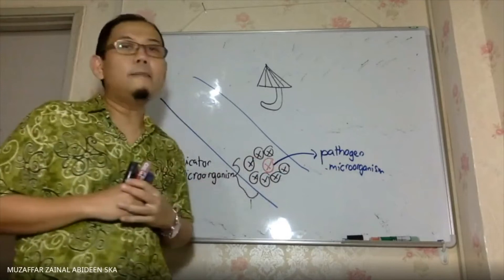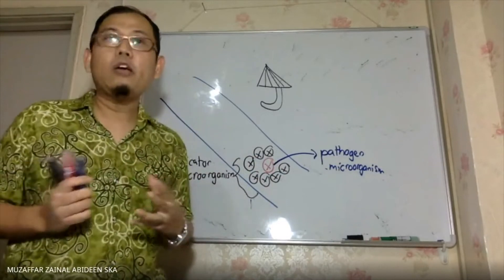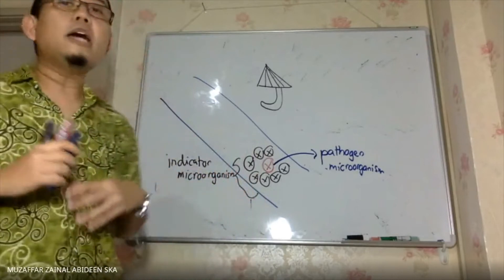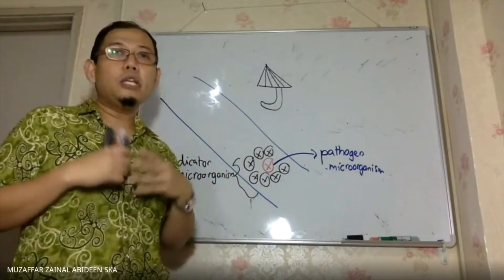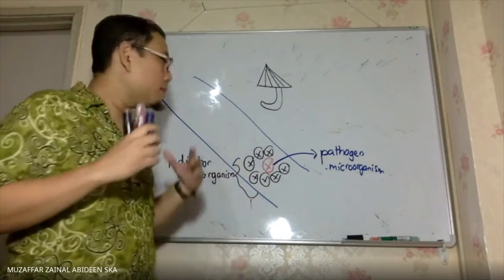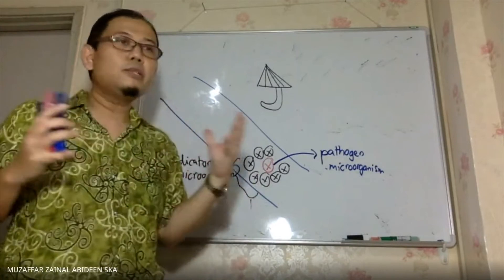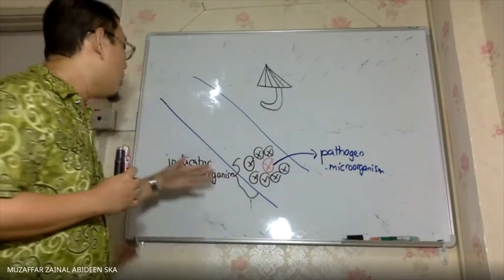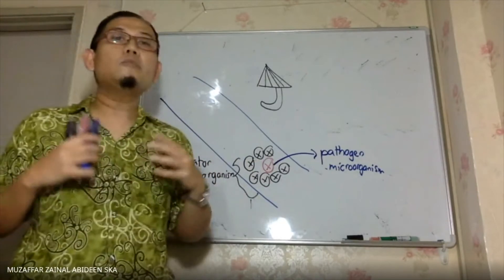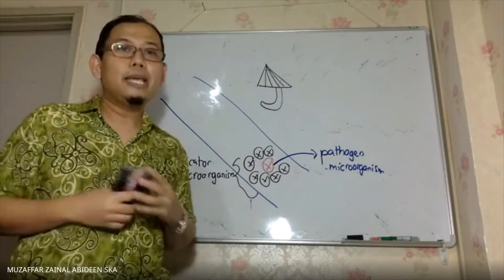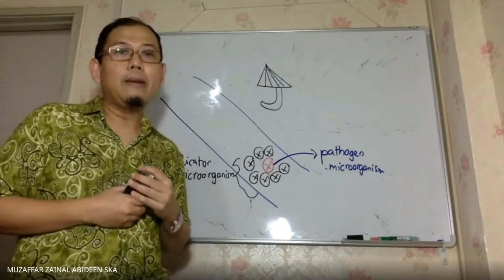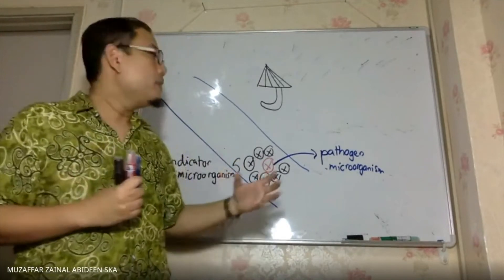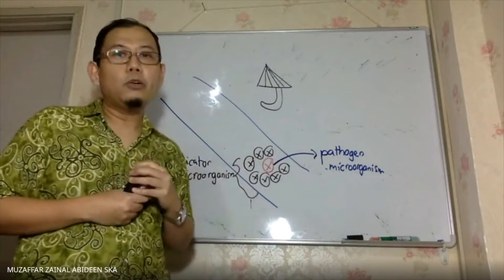In order to determine a specific pathogen microorganism, that is not easy because they are not abundant — there are not very many of them, so they are hard to detect. You need a lot of equipment, experience, and research in order to detect that pathogen. Compared to indicator microorganisms, which are more abundant, a very simple test can be done. Basically, the indicator is an indication of the presence of the pathogen microorganism.